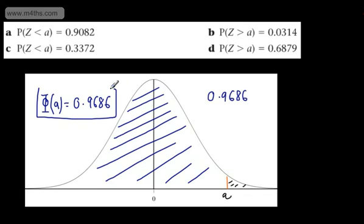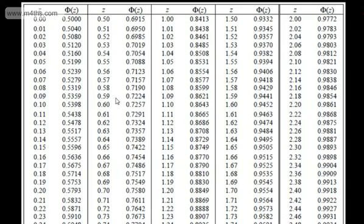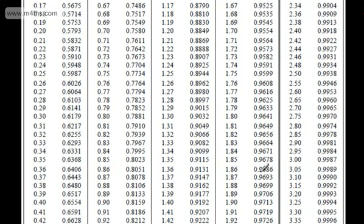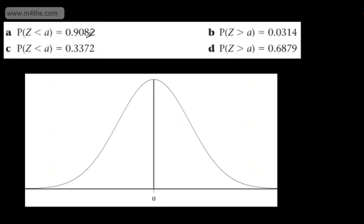What we'll do is read this off and get our value. As you'll see in later videos, if the probability of Z being greater than A is above one half, we're going to have a negative number; if it's less than one half, we'll have a positive number. That makes sense, as the area to the right of 0 gives us a half. Looking up 0.9686 in the table, we get the value that A is going to be 1.86.